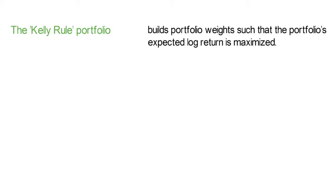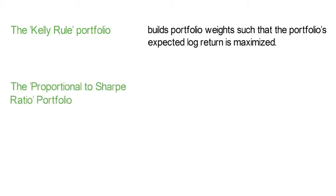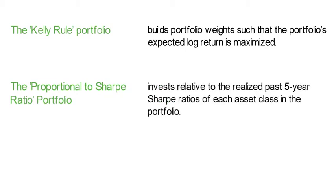Now let's come to the Kelly Rule. The Kelly Rule builds portfolio weights such that the portfolio's expected log return is maximized. And finally, the proportional to Sharpe Ratio portfolio invests relative to the realized 5-year Sharpe Ratios of each asset class in the portfolio.